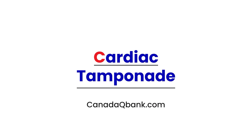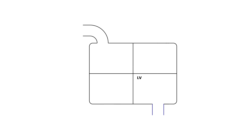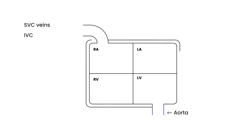Cardiac tamponade is the topic — it's an emergency situation. I'm going to illustrate this with a simple diagram. We all know the heart doesn't look exactly like this, but it's good for understanding. Let's label it: left ventricle, left atrium, right ventricle, right atrium. These are the veins bringing blood back — the superior vena cava and inferior vena cava — and the blood comes out through the aorta. Outside the heart is a layer called the pericardium, which normally does have some fluid in it.